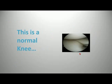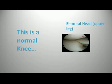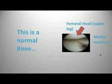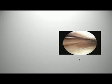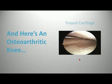This is a normal knee. On top there is a femoral head — the end of the femur, the upper leg bone — covered by a thin layer of very hard hyaline cartilage. Between the femoral head and the top of the tibia is the medial meniscus, which is made up of fibrocartilage, a softer type of cartilage. The top of the tibia, the tibial plateau, is again covered by a thin layer of very tough and hard hyaline cartilage.